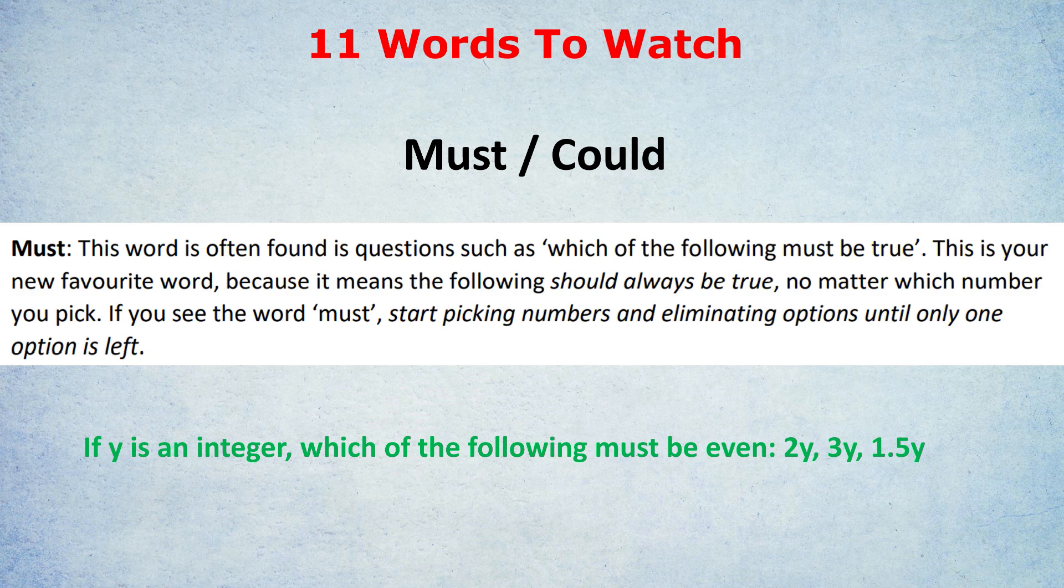So let's take the answer choice 2Y. No matter what number you pick for Y, whether you pick 1, 2, 5, it has to be an integer, minus 5, you're always getting an even answer. So 2Y must be even. But that's quite different to 3Y. 3Y could be even. If Y is 2, then 3Y is even. If Y is 4, 3Y is even. But if Y is 1, or 0.5, then 3Y is not even.